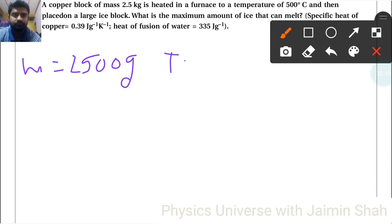Temperature is 500 degrees Celsius, and then placed on a large ice block. What is the maximum amount of ice that can melt? All values are given.